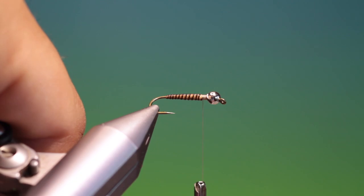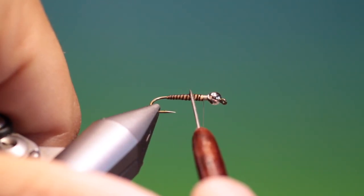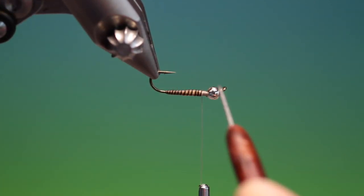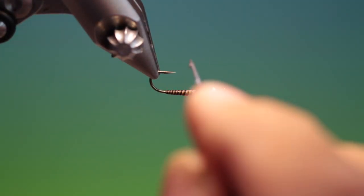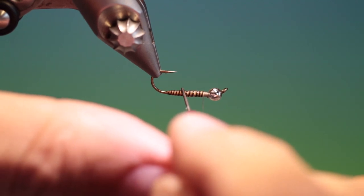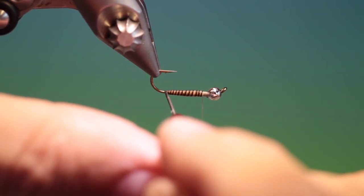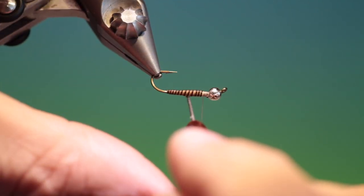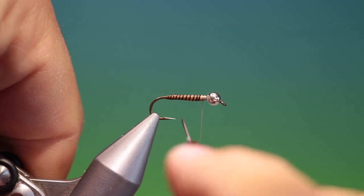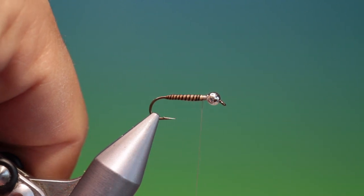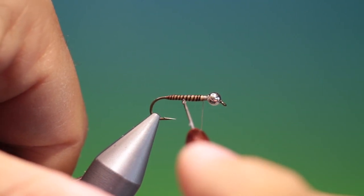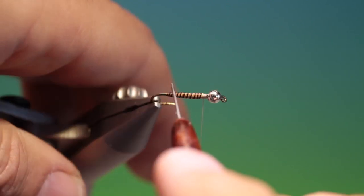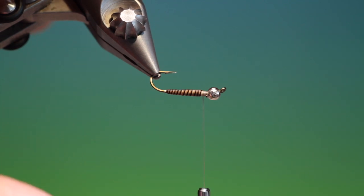I like to apply this with a needle rather than straight from the bottle as you can have much more control over the amount you apply and where it goes. Don't need much, this is just a, this will actually make it sink faster. UV resin bodies cut through the water much better than natural materials. They're more streamlined of course. And it will extend the life of it.